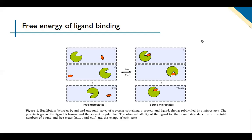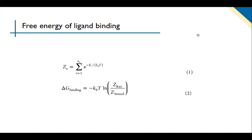We have a green protein and a brown ligand — each of them is a microstate. We can get the partition function from equation one, and we can also get delta G using equation two. Those equations might be familiar to you.